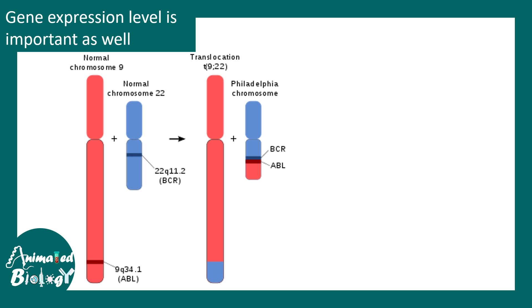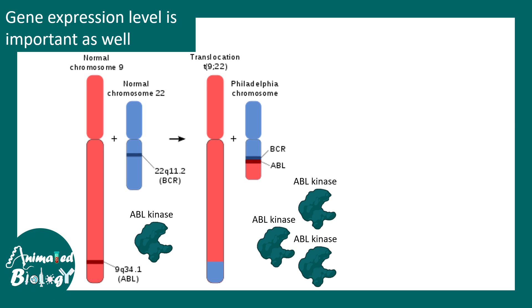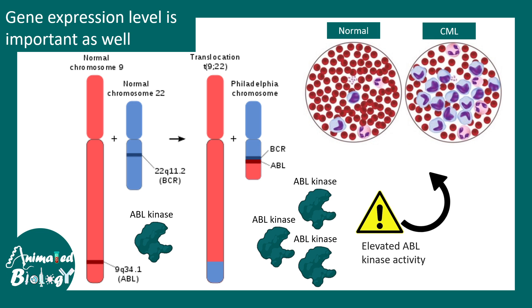A similar example is BCR-ABL, associated with CML. This is a case of chromosomal translocation where part of chromosome 9, which codes for ABL kinase, breaks off and attaches to chromosome 22 near the BCR-containing region. BCR is a highly active zone, leading to overproduction of ABL kinase — not a mutated form, but simply too much of it. Excess ABL kinase leads to abnormal growth and proliferation of leukocytes, resulting in CML.